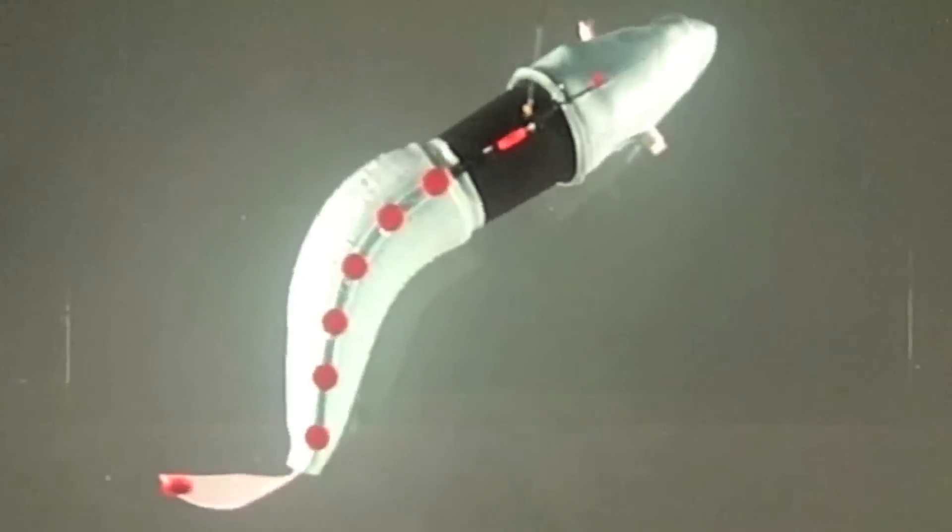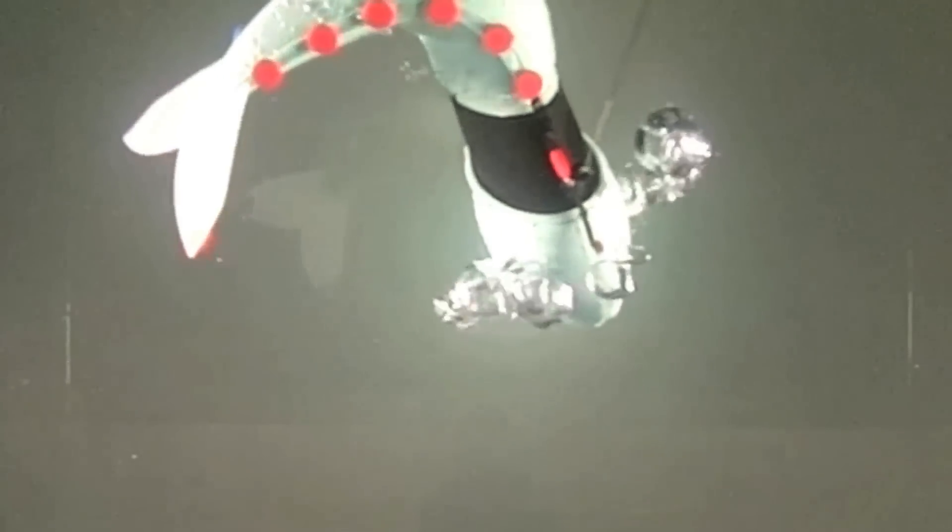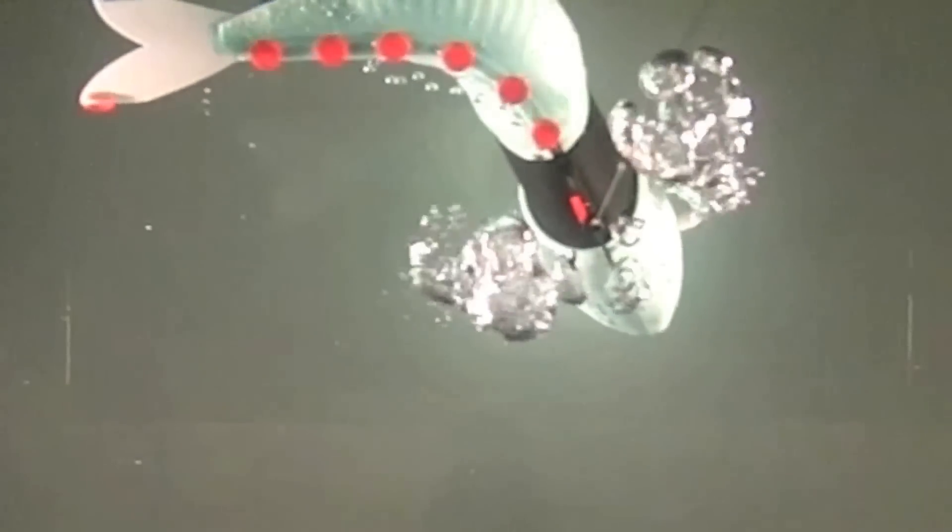The fact that our fish can perform an escape maneuver is really important for the field of soft robotics. It shows that soft robots can be both self-contained and capable of high performance. The maneuver is so fast, and it's got such high body curvature, that it shows soft robots might be more capable than hard robots in some tasks.